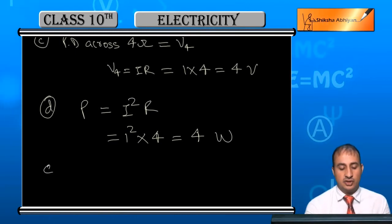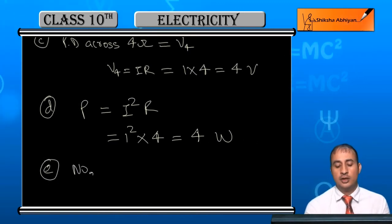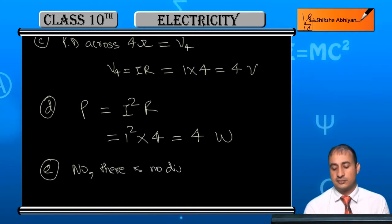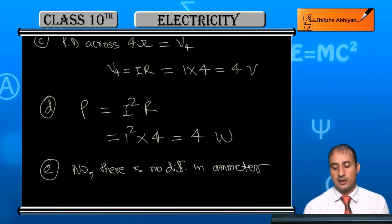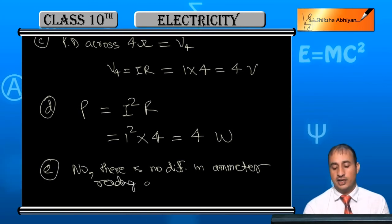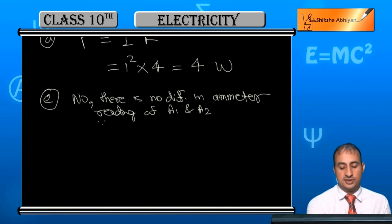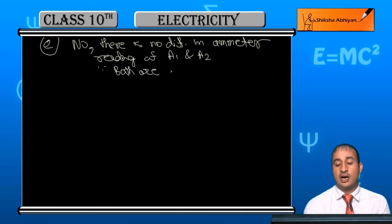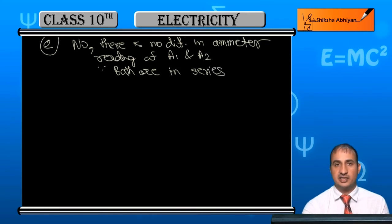The last part: is there any difference in the ammeter readings? No, there is no difference in the ammeter readings of A1 and A2. Since both ammeters are in series, the current through them remains the same.